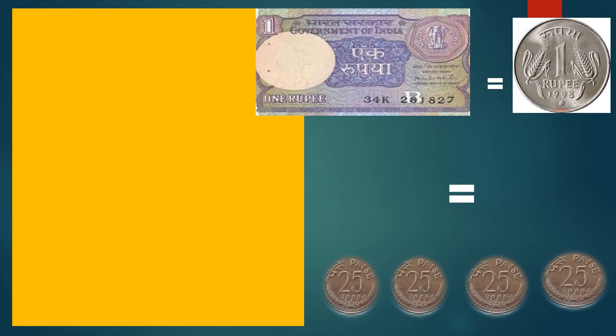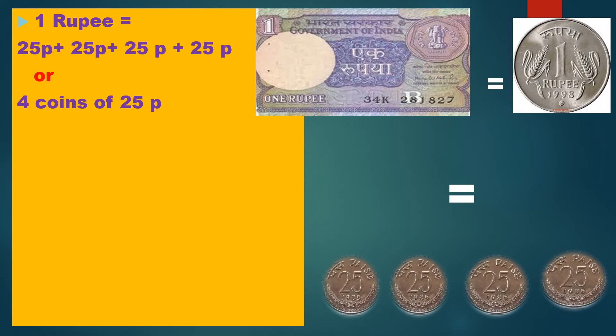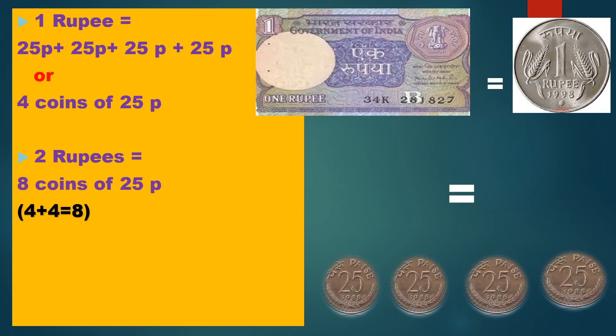1 rupee is equal to 4 coins of 25 paise. So we can also say that 4 coins of 25 paise make 1 rupee. So how many coins will be needed for 2 rupees? For 1 rupee, 4 coins. So for 2 rupees, 4 plus 4, that is 8 coins. So 8 coins of 25 paise will make 2 rupees.